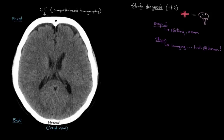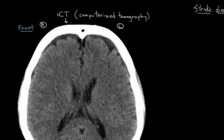We're looking at this brain from the bottom up, so that makes this the left side and this the right side — and that'll be the case for all the images we see. Looking at features of a normal brain on CT, you can see the nice, fairly well-delineated curves of the brain tissue here.